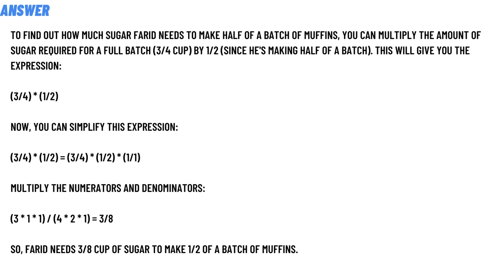Now you can simplify this expression. The formula is to multiply the numerators and denominators. So the answer is three divided by eight cup of sugar to make one divided by two of a batch of muffins. That is the answer to the question.